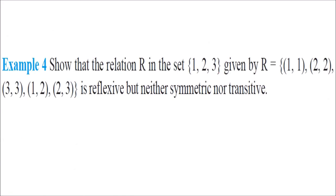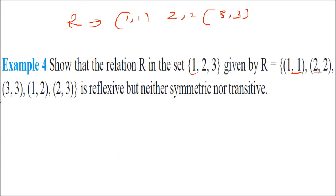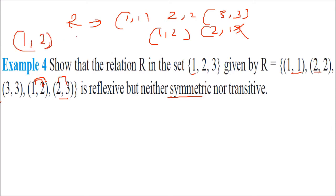Show that the relation R in set {1, 2, 3} given by {(1,1), (2,2), (3,3), (1,2), (2,3)} is reflexive but neither symmetric nor transitive. Reflexive: (1,1), (2,2), (3,3) are all present. Not symmetric: (1,2) is there but (2,1) is not — so (a, b) is present but (b, a) is not. Not transitive: (1,2) and (2,3) are there, but (1,3) is not present in this relation.